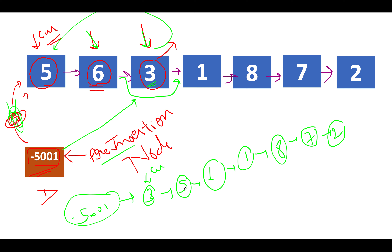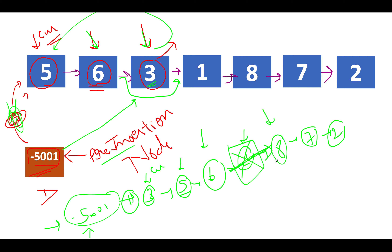We continue the iteration. Three and five are already sorted, five and six are already sorted. Next we see 1, which is out of sync again. We repeat the same process — start from the dummy node, identify the pre-insertion position for 1, which turns out to be the same -5001 node. We update the three pointers accordingly. The updated list becomes: -5001, 1, 3, 5, 6, 8, 7, 2. Then 6 and 8 are sorted, 7 and 2 are out of sync — we repeat the same steps for them, and the list gets fully sorted.